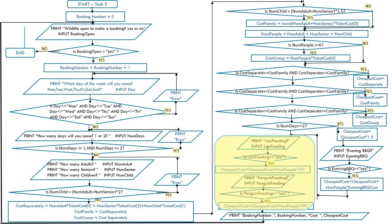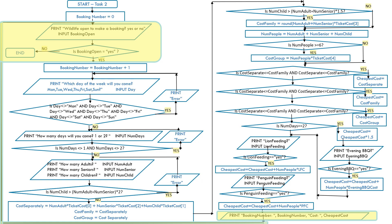Print penguin feeding, input penguin feeding. Is penguin feeding equal to yes? If yes, add to cheapest cost: cheapest cost += number of people × PFC (penguin feeding cost). Now we've finished all calculations — print booking number and print the total cost of their trip. An arrow goes from the bottom back up to the while loop prompt: 'Is the wildlife park open to make a booking?' If yes, repeat the entire algorithm; if no, end the program.